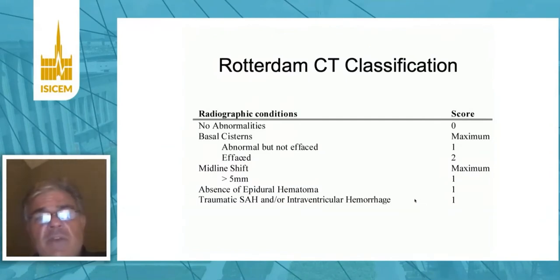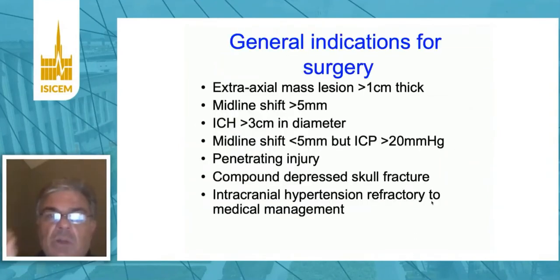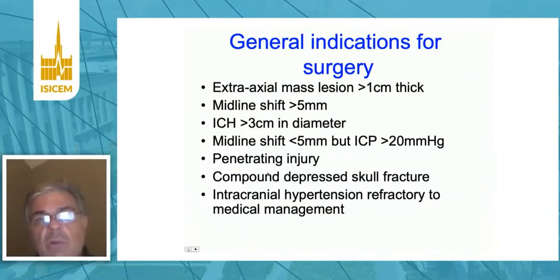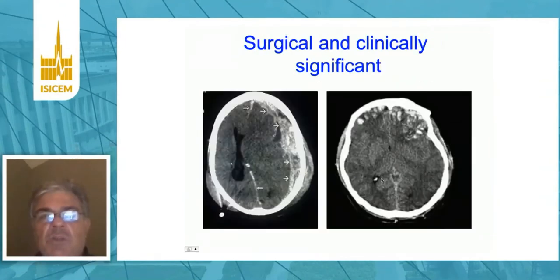CT can be used to classify head injury, which is useful for research purposes. The most frequently used classification is the Rotterdam CT classification. CT can also be used to guide surgery. In general, an extra-axial mass lesion greater than one centimeter thick, more than five millimeters of midline shift, a hemorrhage greater than three centimeters in diameter that's intracerebral (location dependent), penetrating injury, or compound depressed skull fracture are general indications for surgical intervention.